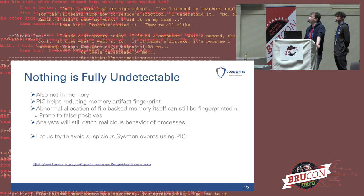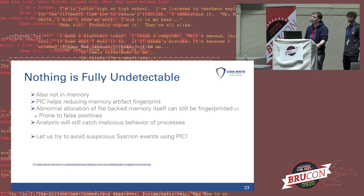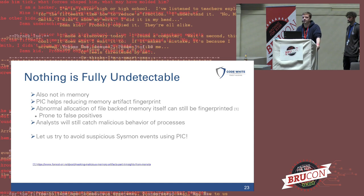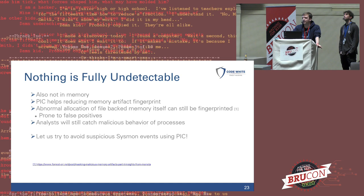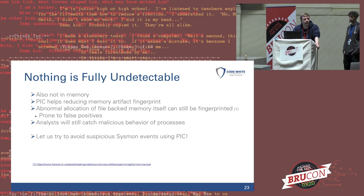Keep in mind that nothing is fully undetectable, even in memory. Position-independent code will definitely help reduce your memory artifact fingerprint, but there are other things defenders can monitor. For example, the abnormal allocation of file-backed memory itself can still be fingerprinted — I highly recommend the blog post by Forrest Orr if you want to dig deeper. Also, even if your custom C2 is fully position-independent code and leaves no memory artifacts, the process you infected will still behave suspiciously — making awkward network connections, trying to dump LSASS. Analysts will try to catch malicious behavior of processes.